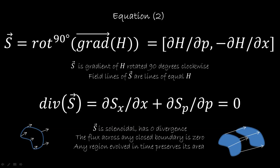We can rewrite this second part by saying that the divergence of s is equal to zero — you can verify this from the definition of divergence by substituting the expressions. So another way of saying this is that s is solenoidal, meaning it has zero divergence. Another way of saying s is solenoidal is that if we take any closed boundary and measure the flux across it, the flux of s is zero. And equivalently, if we have a region of phase space and move it according to s, the area of that region is preserved. These four statements are all equivalent — take one of them and all the others are implied.